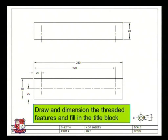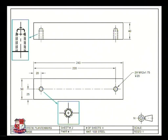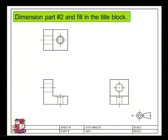Draw and dimension the threaded features and fill in the title block like this. So these are the details shown in the detailed drawing. A hole is drilled which is represented by the dotted lines. Dimension part number two and fill in the title block - these are the three views of the detailed drawing of the component.